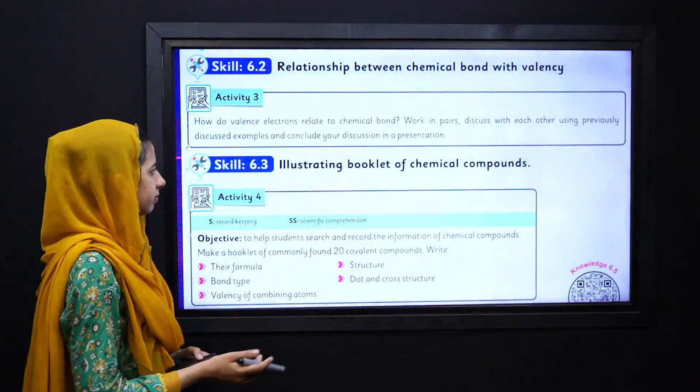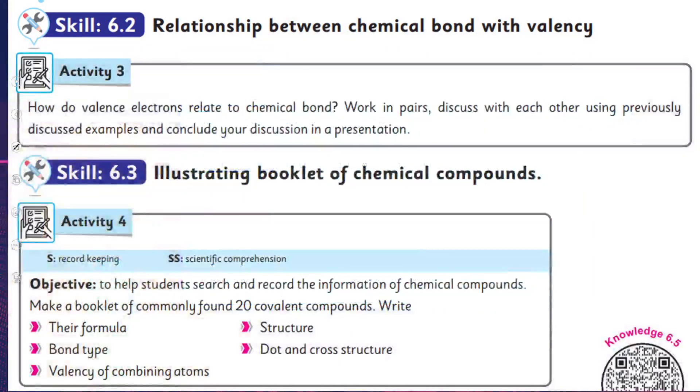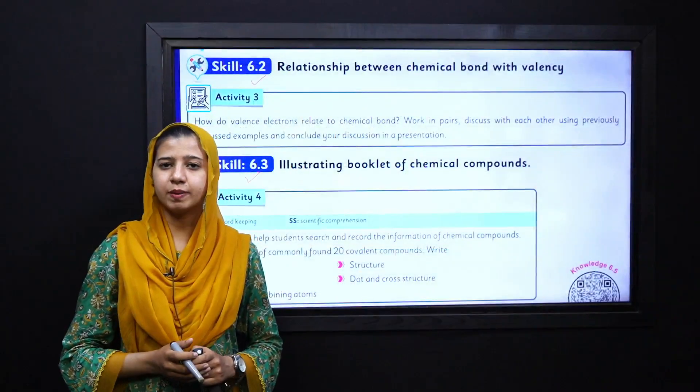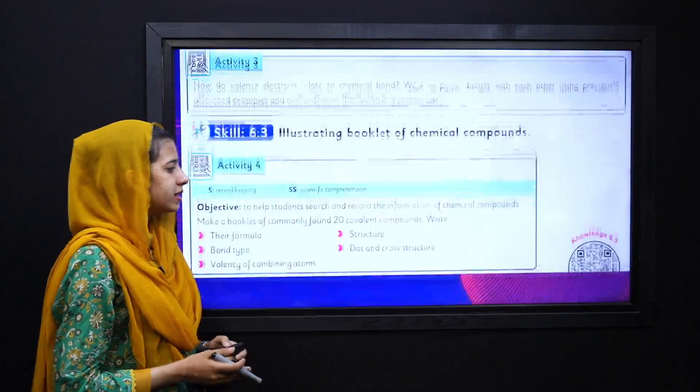Further, by applying this knowledge, we will achieve our skills - that is Skill 6.2 and Skill 6.3. Again, you can open these skill sheets by scanning the QR code that is pasted on your books just beside these skills.